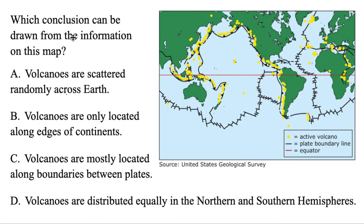Which conclusion can be drawn from the information in this map? The first option: volcanoes are scattered randomly across the Earth. Well, the yellow dots are the volcanoes and the black lines are the plate boundaries, but there's definitely a pattern going on here. It's not random, so A is no good.